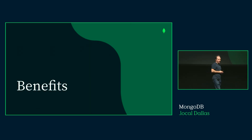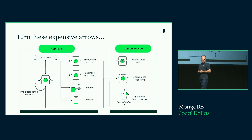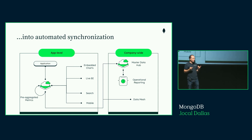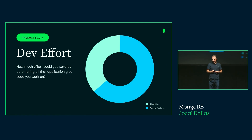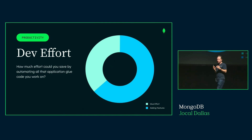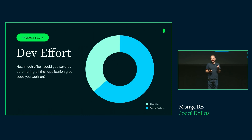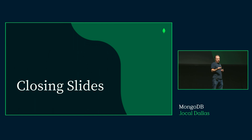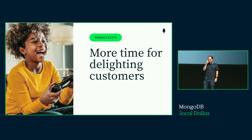To summarize the benefits: it comes down to turning those expensive arrows — each with five elements of work — into automated synchronization. Where you can do that, it really moves the needle on productivity. If you can turn the time spent on glue code and managing data pipelines into adding features, it can save 40% or more, depending on how often you can use the platform versus separate products. The net result is more time for delighting customers, which is why you're building applications in the first place.